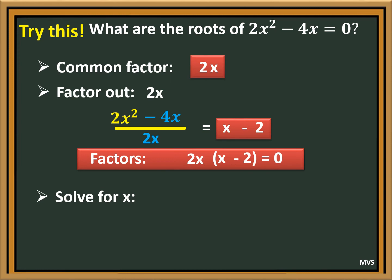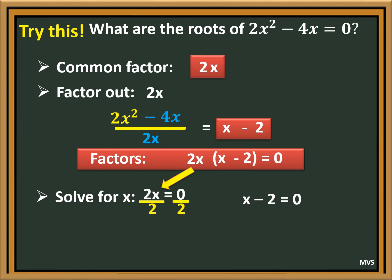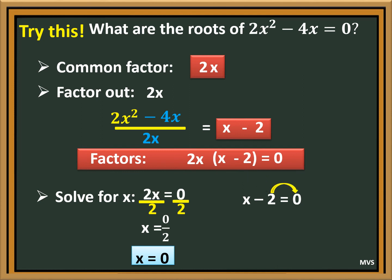Let us solve for x by equating the two factors to zero. So we have 2x is equal to zero, and x minus 2 is equal to zero. Solving 2x equals zero: dividing both sides by 2, x is equal to zero. Next, solving x minus 2 equals zero: transpose negative 2 to the right side, so it becomes positive 2. Therefore, x is equal to 2.